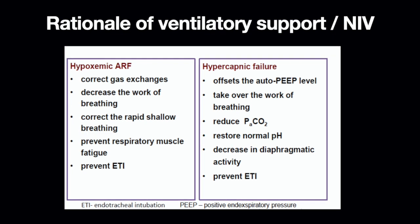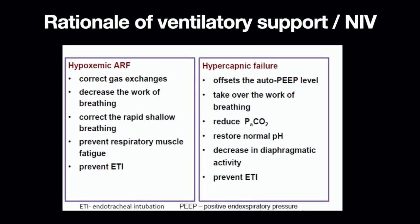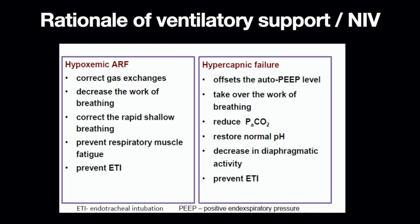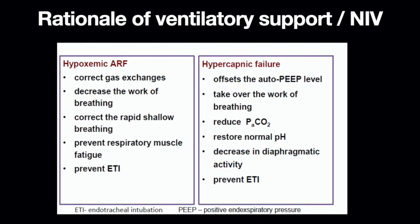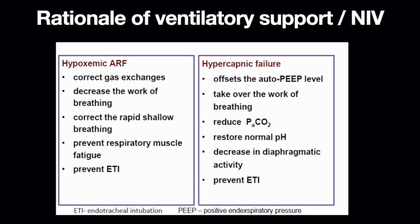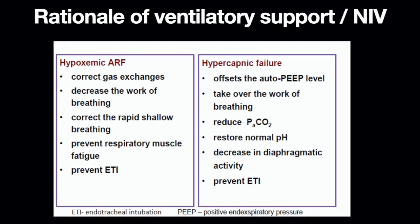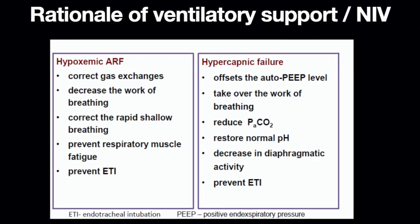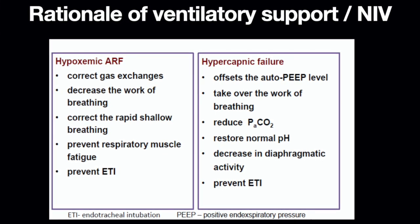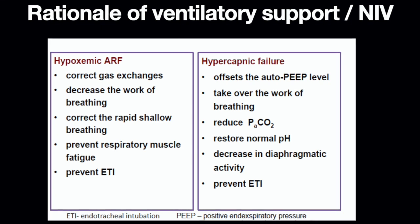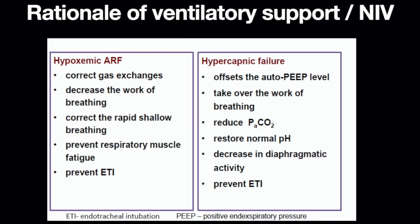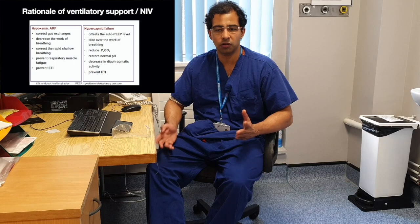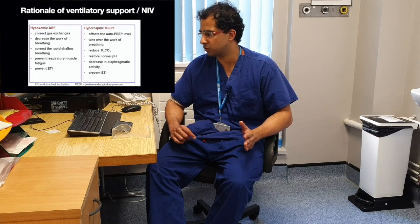With regard to hypercapnic respiratory failure or type 2 respiratory failure, the initiation of NIV or positive pressure ventilation helps to offset the intrinsic PEEP which is generated. It helps to reduce the work of breathing and reduces the carbon dioxide — the PaCO2 level — and helps correct the pH towards normal range from respiratory acidosis.